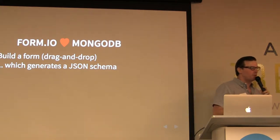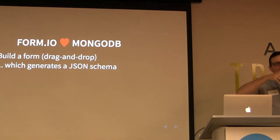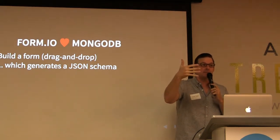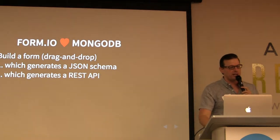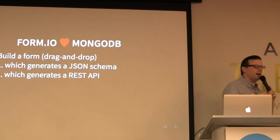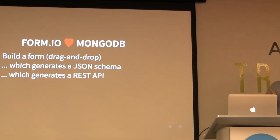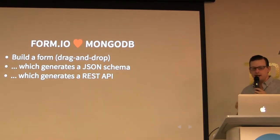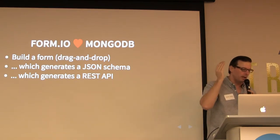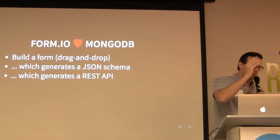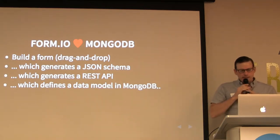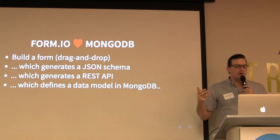That representation of a form — because you're dragging first name, last name, email, and providing validation criteria — puts you in the right mindset to say: I have all the information I need to automatically generate a REST API behind that form. All of this is based on the MEAN stack. The MEAN stack front end is Angular, although we have libraries for React and other libraries as well. Once you generate this REST API, it then generates the data model in MongoDB.